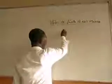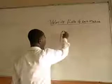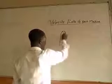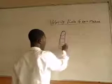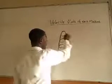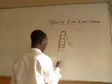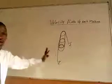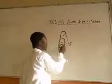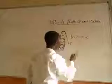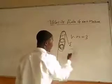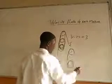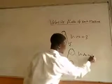Next is the pulley system. For a pulley system, what you need to do is simply count the number of pulleys. For example, if you have three pulleys, then the velocity ratio equals 3. If you have two pulleys, the velocity ratio equals 2. It is very simple for a pulley system.